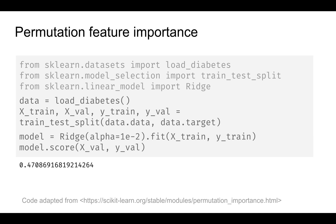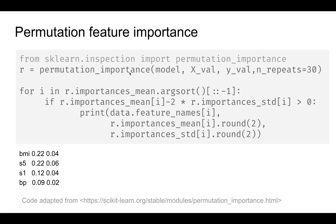Here is the code snippet using the diabetes dataset. The baseline score is 0.47. When we perform permutation importance, we get scores for each feature — BMI, S5, and S1 (blood pressure) appear as top features. If we add these importances together they sum close to 0.47 with their standard deviations. You can also specify different metrics, which will give different rankings of feature importance.